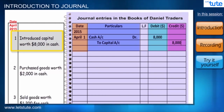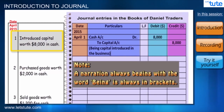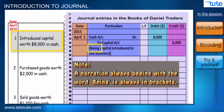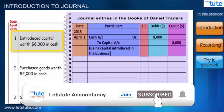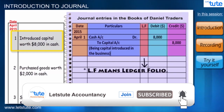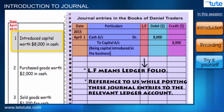After recording the entry, we write the narration in brackets: 'Being capital introduced in the business.' Every narration begins with the word 'being.' This step is important because if we refer to a transaction in future, we can easily identify it. We have left one column — LF — which refers to Ledger Folio. This column acts as a reference while posting journal entries to relevant ledger accounts, which we will understand in our upcoming sessions.